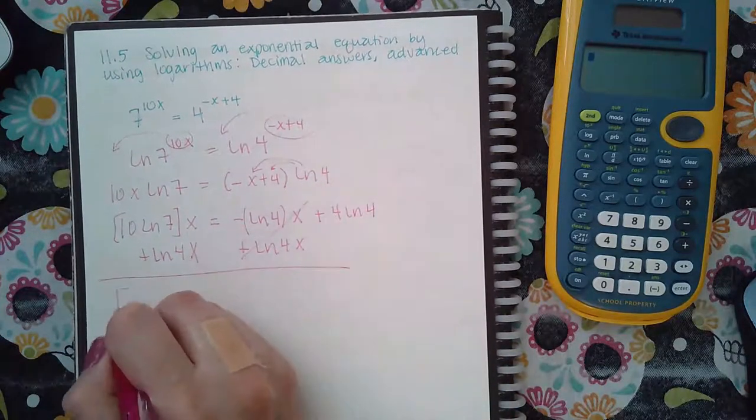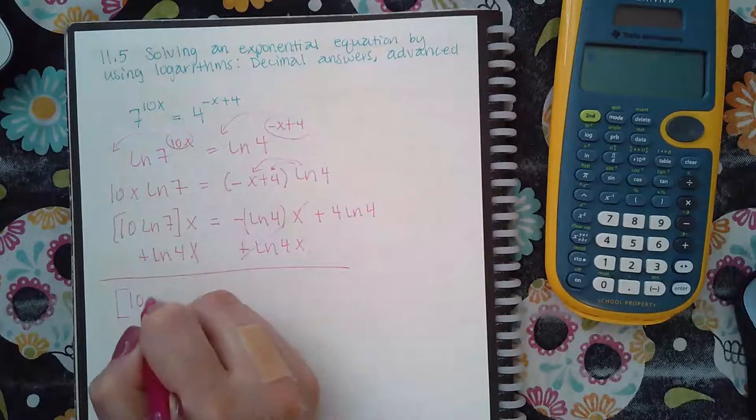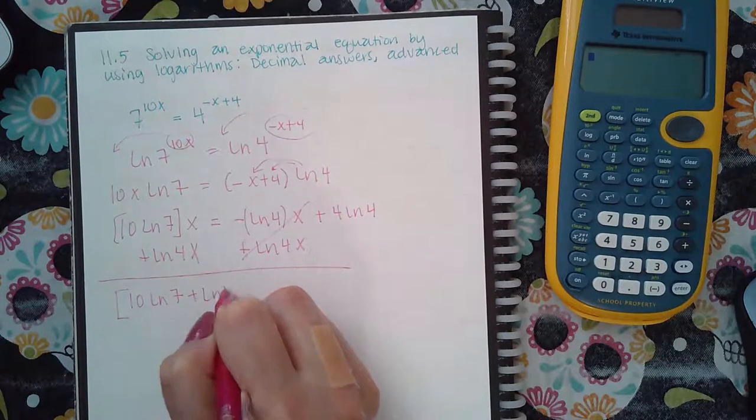So then what that does is it makes my coefficient of x, 10 ln(7) plus ln(4).